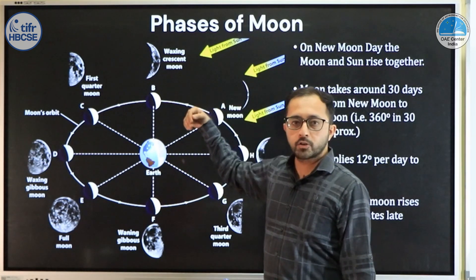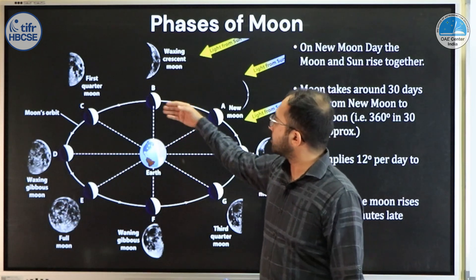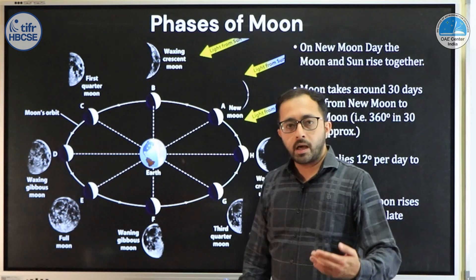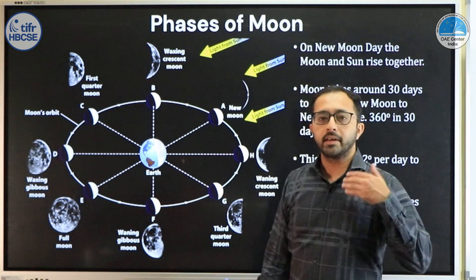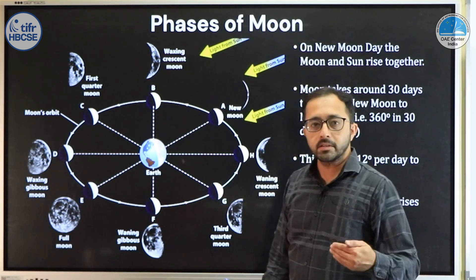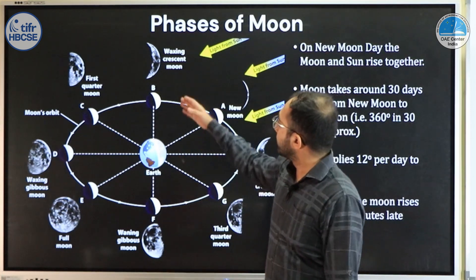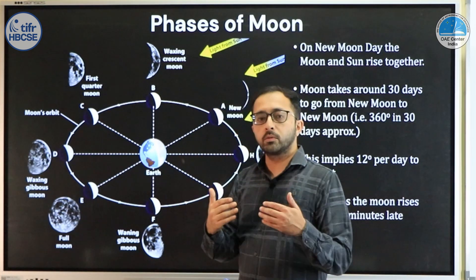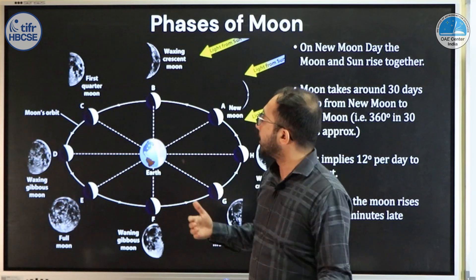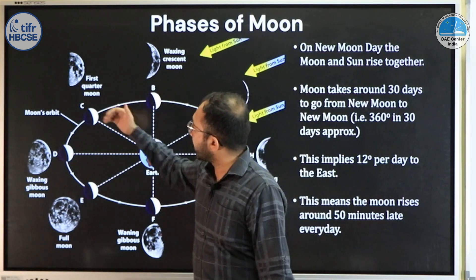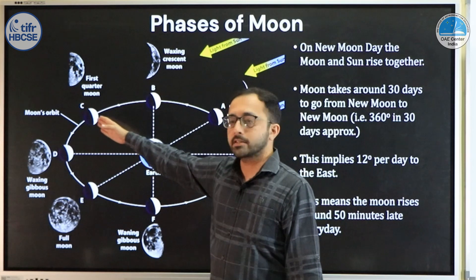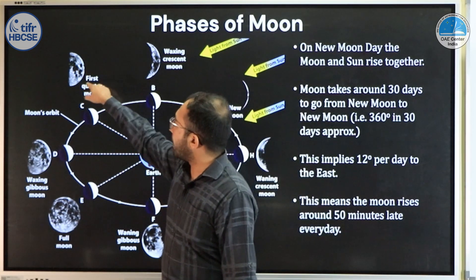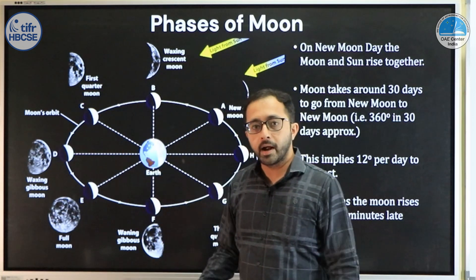As the moon moves in its orbit, after some time you start seeing a crescent of the moon. The moon is increasing its size as seen by the observer on earth — this is called the waxing crescent. The size of the moon as seen by the observer is increasing.